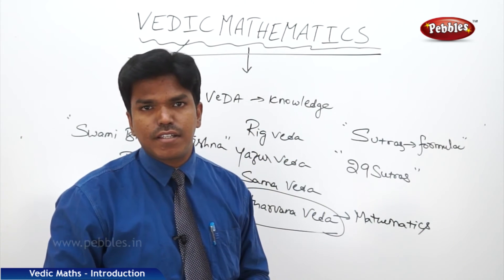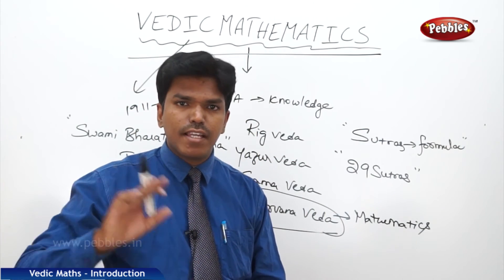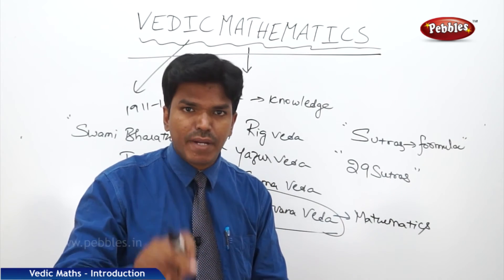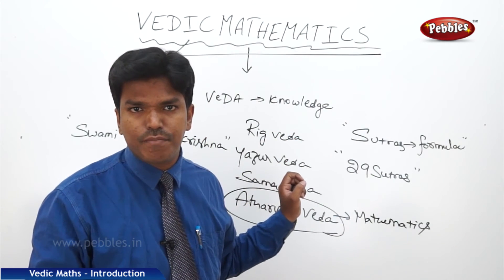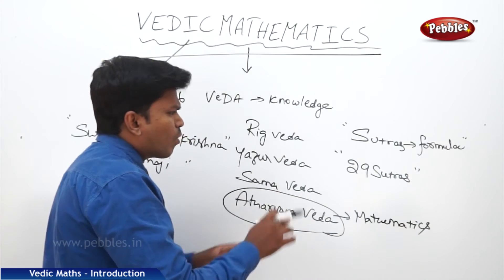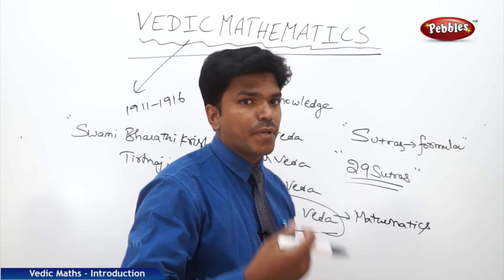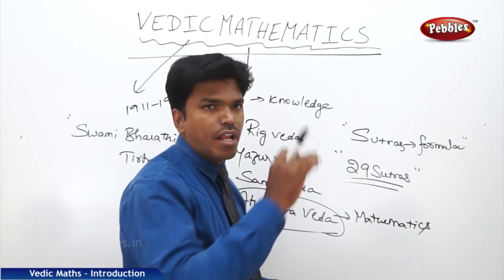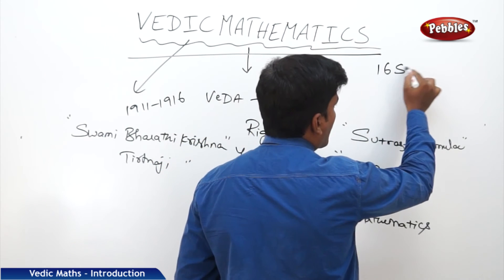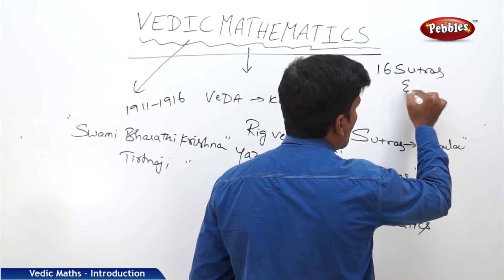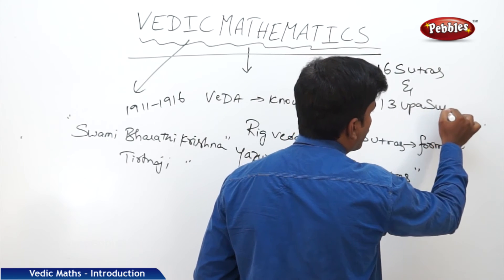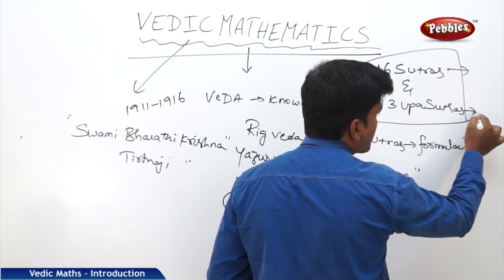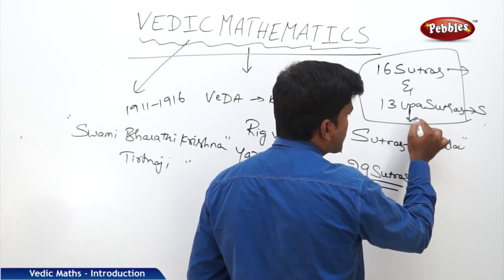Since then, the term came into existence. Now, there are 16 sutras and 13 upasutras. Sutras means formulae and upasutras means subformulae. Subformulae is nothing but the corollary, just like we have in mathematics, the corollary after the theorem.